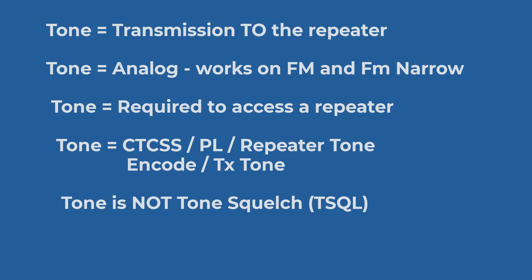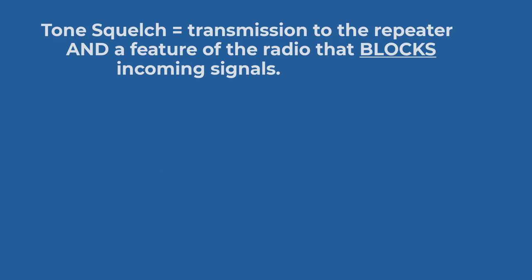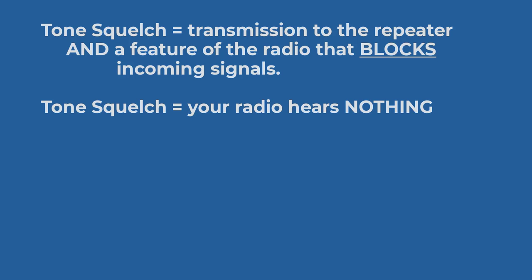So let's talk about tone squelch. Tone squelch is transmission of the CTCSS tone to the repeater and turns a feature on on your radio that blocks incoming signals. With tone squelch engaged, your radio hears only an incoming signal that has a matching tone value. Otherwise, your radio hears nothing.